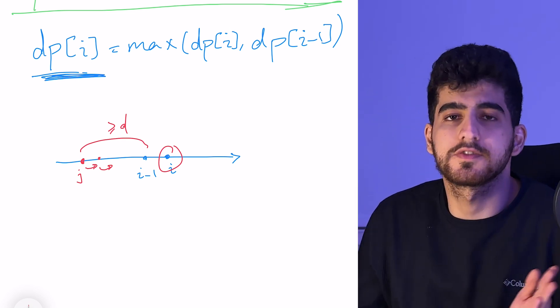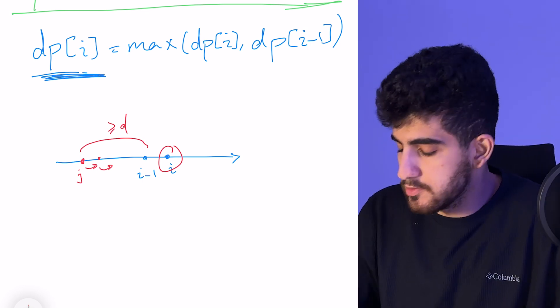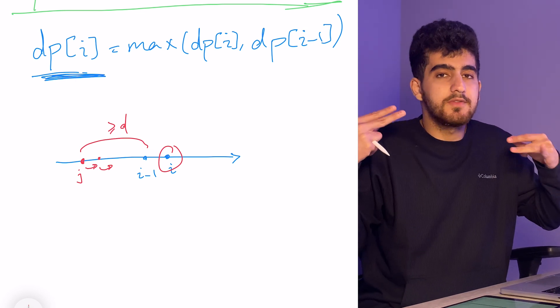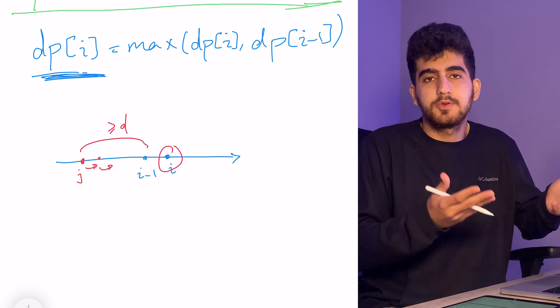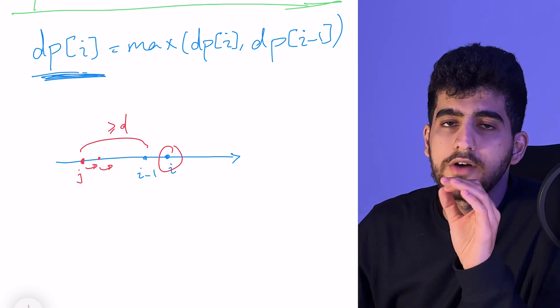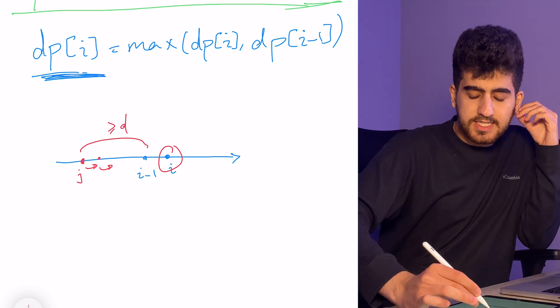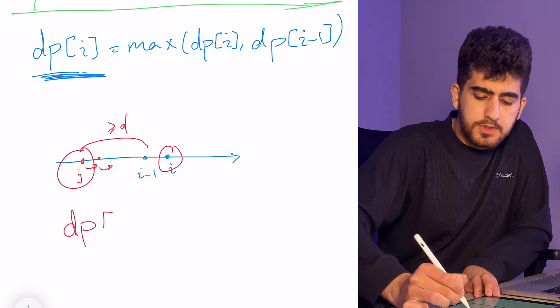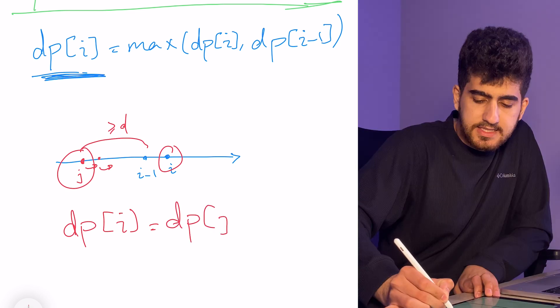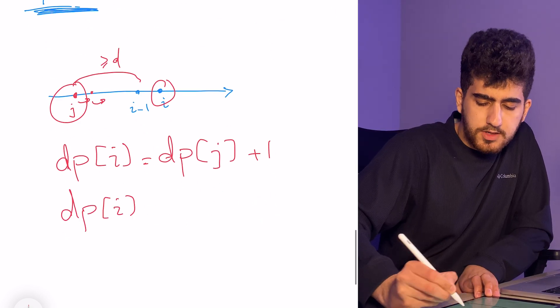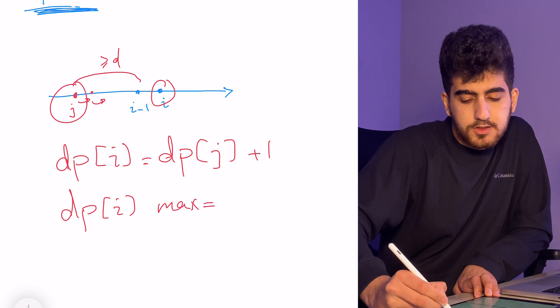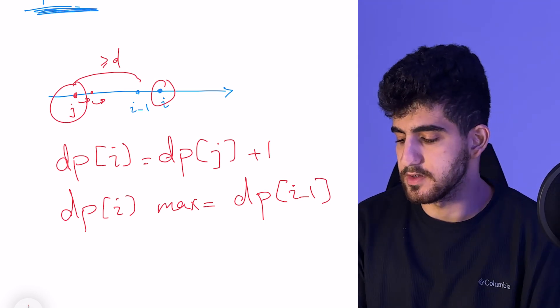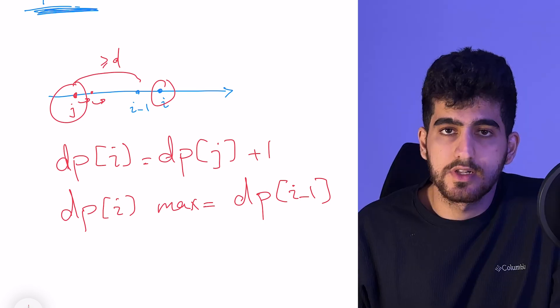This way, this pointer only moves forward. The number of times that it goes to the right is limited because I have limited number of cows, and this pointer never goes left, it always goes right. So I will have at most n moves, o of n moves, and to be precise n-2 at most. These operations of moving it rightwards wouldn't take long in total. Therefore, I simply find this j and my dp of i is going to be dp of j plus 1, and then dp of i max equal to dp of i-1. It means that dp of i is equal to maximum of itself and dp of i-1. Was that clear? Let me know in the comments below. Let's get into code.